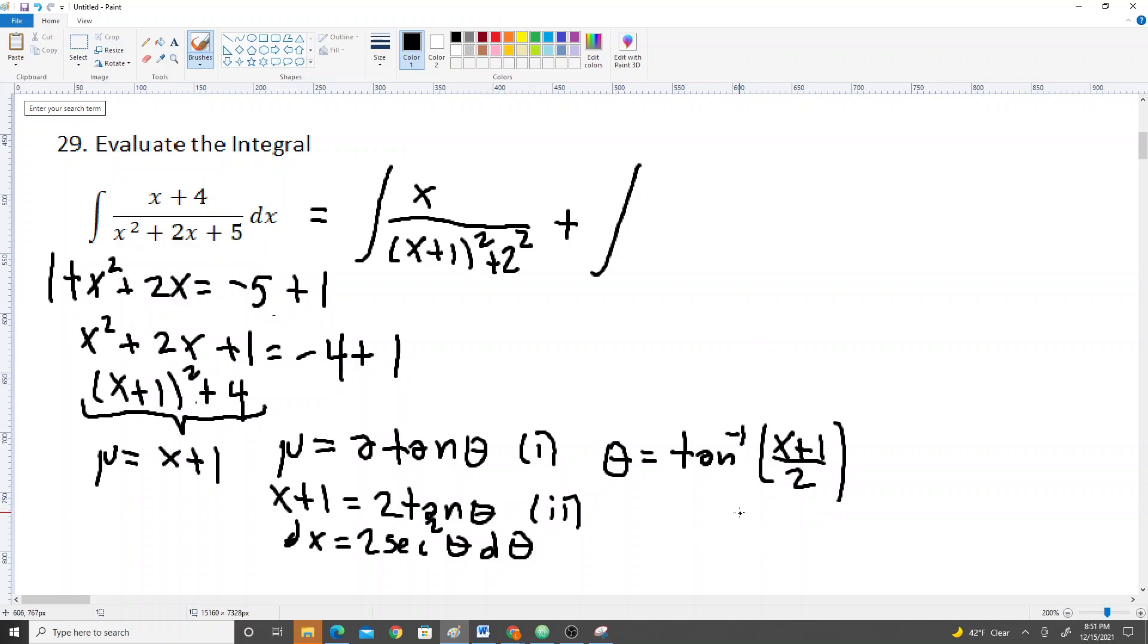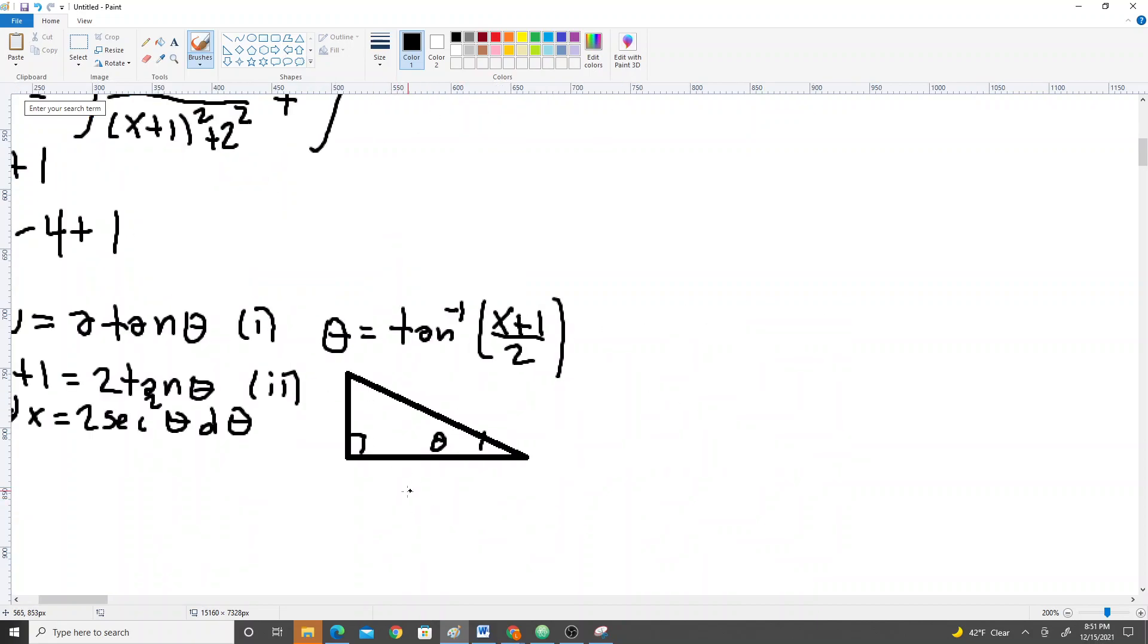Okay. So far, everything looks good. Then you can draw a triangle to visualize why we used it, why we used the substitution. Because if this is tangent inverse, so it's adjacent over opposite, our adjacent, if we draw theta here, is right here. And this is going to be x plus 1, and this is going to be, don't forget the squared, x plus 1 squared, and this is going to be 2 squared. That means this side right here is x plus 1 squared plus 2 squared.